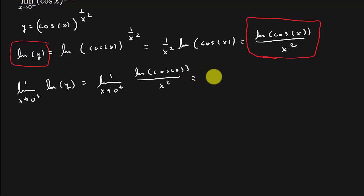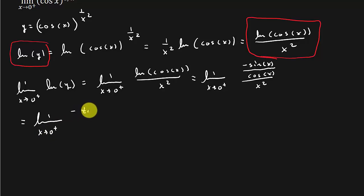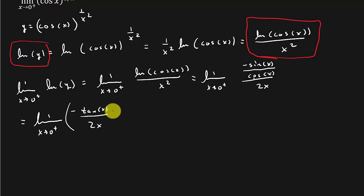This gives us the limit as x goes to zero from the right. We take the derivative of the numerator: the derivative of natural log of cosine x is negative sine x over cosine x. The derivative of x squared is 2x — sorry, the denominator should be 2x, not x squared. So we get the limit of negative tangent x over 2x.